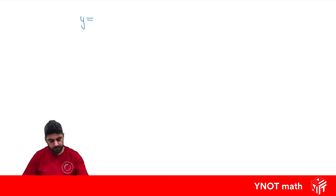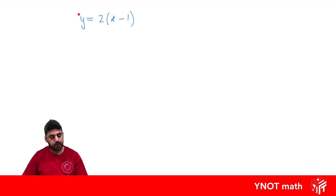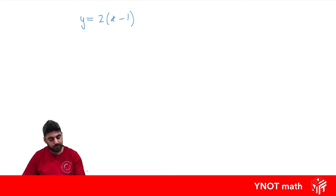y equals 2 outside of x minus 1. Currently, y is the subject because it's the pronumeral on its own. But we can always rearrange an equation to make another variable the subject. So let's go ahead and make x the subject in this one, which means we need to get x by itself.